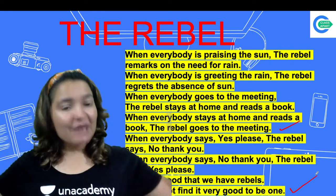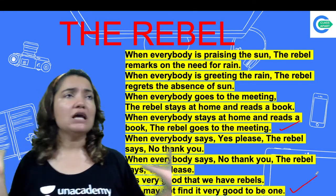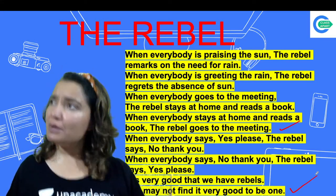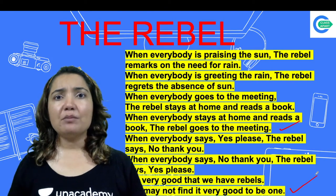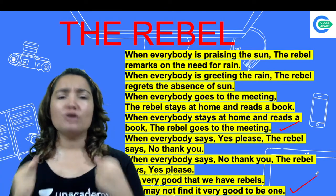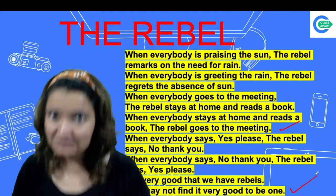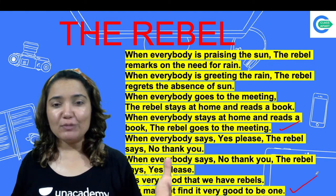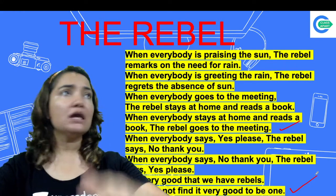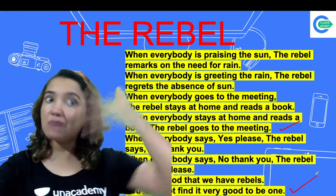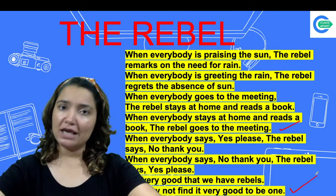So we have read and finished this poem — a small, cute poem. The rebel's life has shown us that a rebel is somebody who doesn't follow what's happening all around but goes their own way — that's called the rebel. I hope the poem is clear. It was a very small and cute poem, and maybe even we have been a rebel at some point, so we can all relate to this poem.